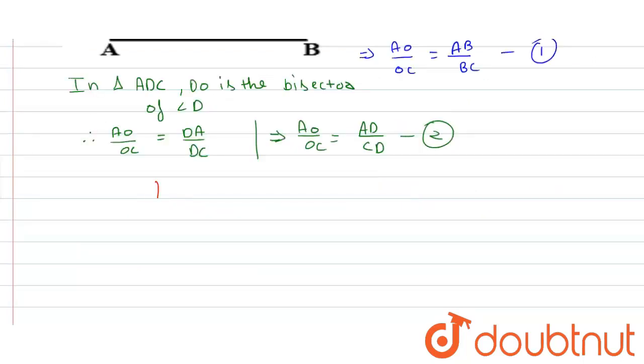So from equation 1 and 2 we get AB upon BC is equal to AD upon CD, which is our answer.